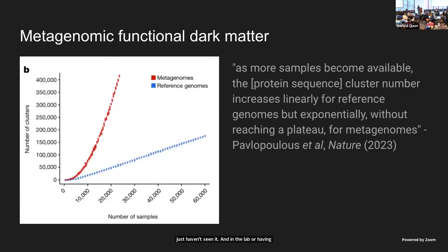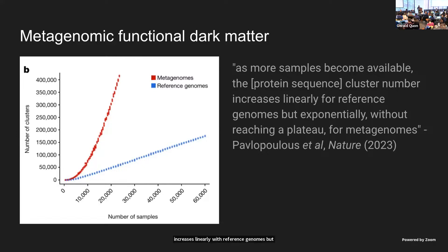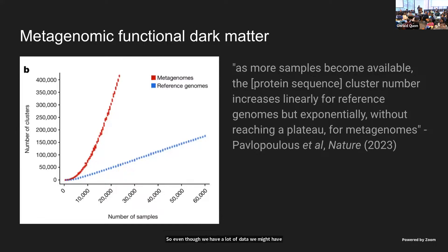This is a paper from folks at JGI, the Joint Genome Institute. They looked at all the protein sequences present in the dataset and clustered them by sequence. They found that as more samples become available, protein sequence cluster number increases linearly with reference genomes, but exponentially and without reaching a plateau for metagenomes. So even though we have a lot of data, we might have just scratched the surface of the diversity we're looking at.